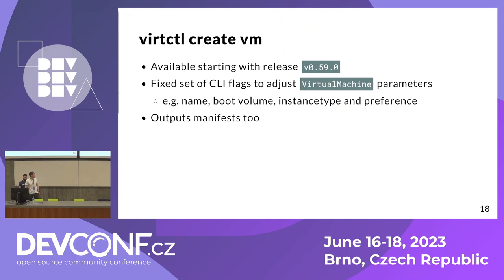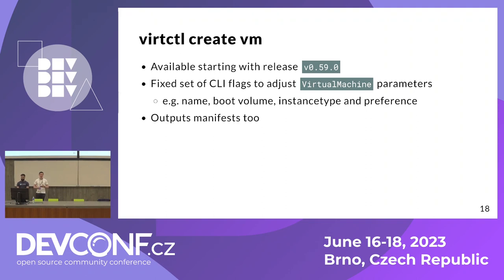The last new subcommand is virtctl create VM. As its name says, it allows you to create virtual machines. It's available starting with the version 0.59 release, and it provides you with a fixed set of CLI flags to adjust virtual machine parameters. For example, you can specify a name, a boot volume, and you can also specify the instance type and the preference to be used. This command outputs manifests, and we didn't want to reinvent the wheel and create another Kubernetes client. If you're familiar with Kubernetes, you already know how to work with manifests. You can also use it in a script and just pipe the output into OC or kubectl — quite an elegant way.